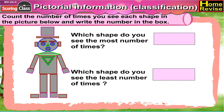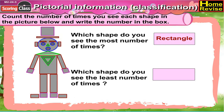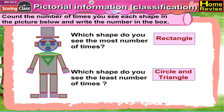You're right — that is the rectangle. Which shape do you see the least number of times? That's the circle and triangle.